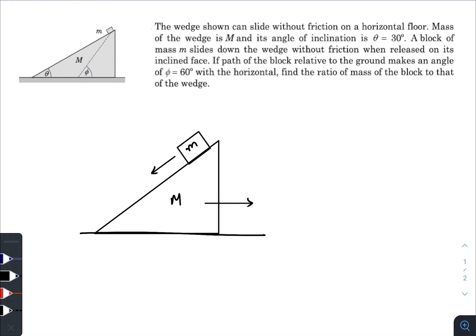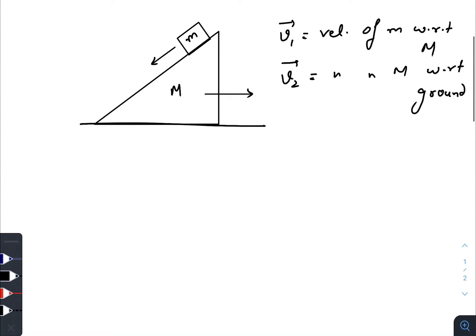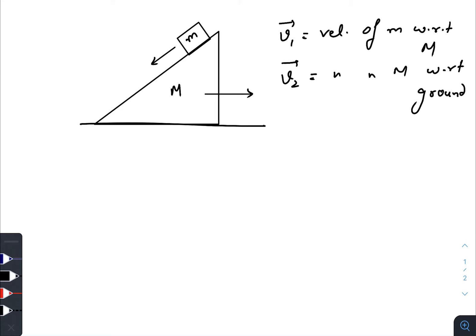But you can predict the velocity of the wedge while standing on the ground. So let us take two variables: first variable will be velocity v1, which is velocity of m with respect to capital M, and variable v2, that is velocity of capital M with respect to ground.